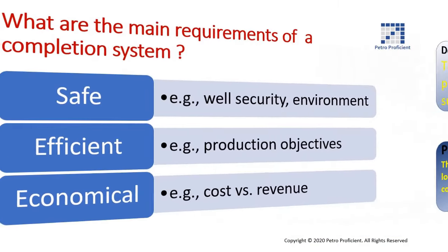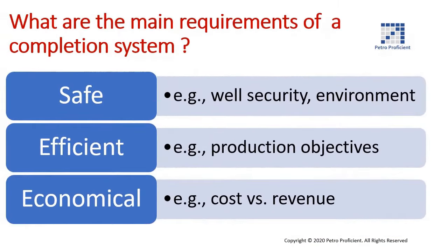What are the main requirements of a completion system? There are three basic requirements. The system must provide an efficient, safe and economical way of producing petroleum products. Current industry conditions may force operators to place undue emphasis on the economic requirement of completions. However, a non-optimized completion system may compromise long-term company objectives.